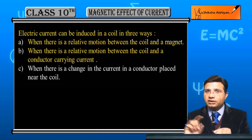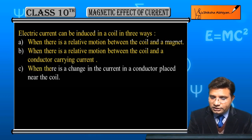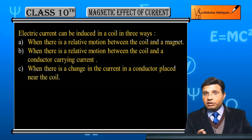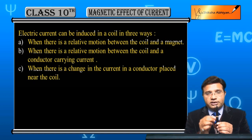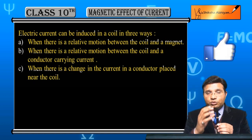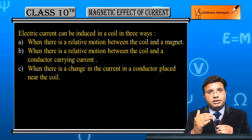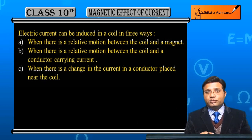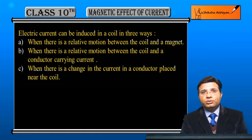Third is when there is a change in the current in a conductor placed near the coil. इस बार movement नहीं कर रहे, बल्कि conductor से पास कर रहे current की value को change करेंगे — कभी current घटेगी, कभी बढ़ेगी। तो coil से related magnetic flux change होगा और induced current आ जाएगी। यह तीन तरीके हैं जिनसे induced current लाई जा सकती है।